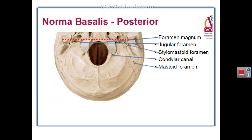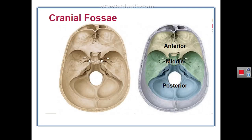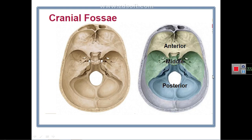This is all about the norma basalis, the inferior aspect of the skull. We have now finished the anatomy of all the skull views: norma frontalis from the front, norma lateralis from the side, norma verticalis from above, norma occipitalis from behind, and norma basalis from below. This concludes osteology of the skull, part one.